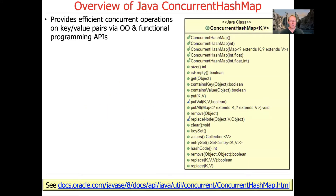ConcurrentHashMap is a very important concurrent collection — probably by far the most common one used. It provides an efficient set of concurrent operations on key-value pairs, using both object-oriented and functional programming APIs.